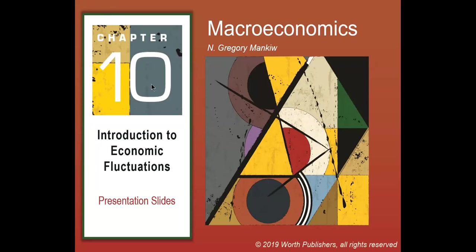In chapter 10, we're going to start to talk about the economy in the short run and short-run economic fluctuations. So far, we've focused on what happens to the economy over longer periods of time — over a few years or a few decades. But instead, we're going to focus on how the economy behaves over the period of a couple of years or a couple of months, and why the economy has these short-run fluctuations.